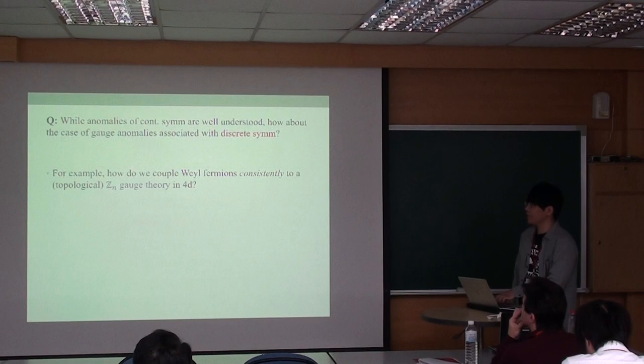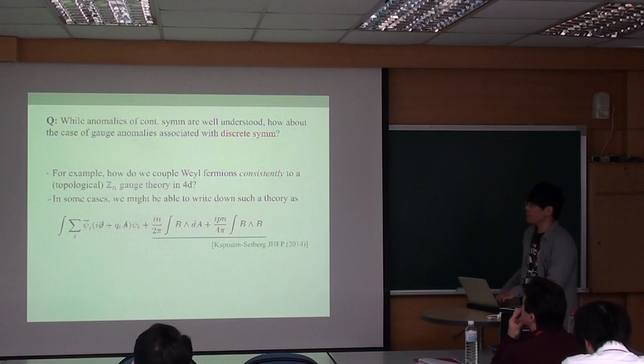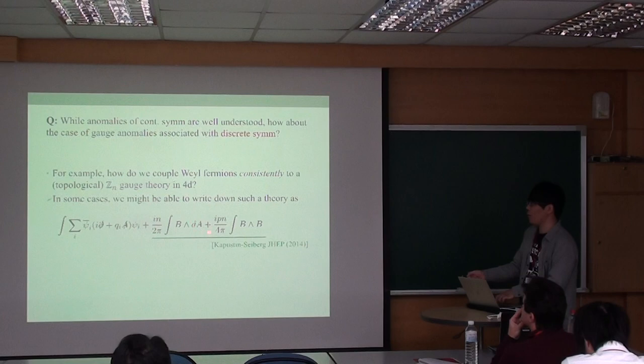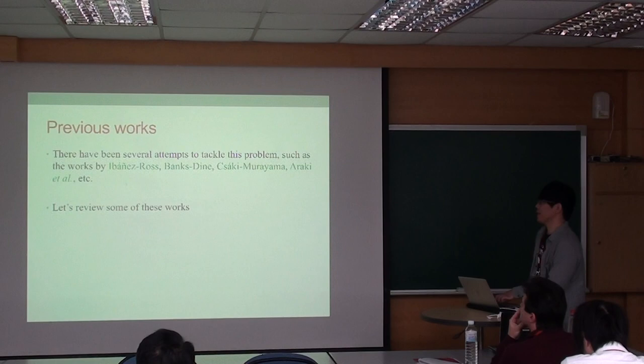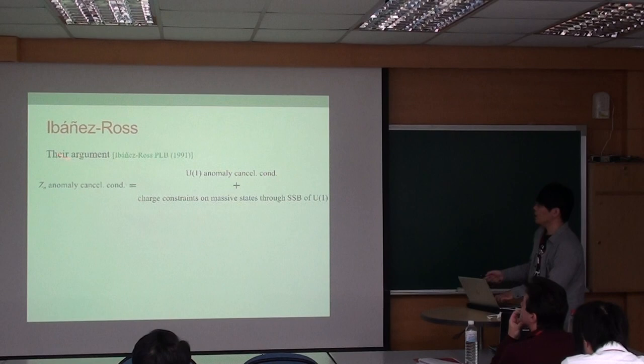For example, how do we couple Dirac fermions consistently to a topological ZN gauge theory? In this case, we might be able to write down such a theory with the following local actions using both one-form A and two-form B fields. Of course, there have been several attempts to tackle this problem, and Professor Seki is one of the pioneers working along this line. Let me review some of these works.